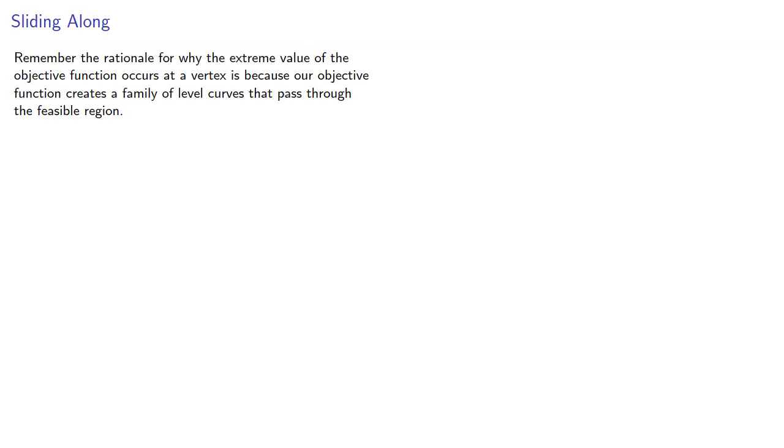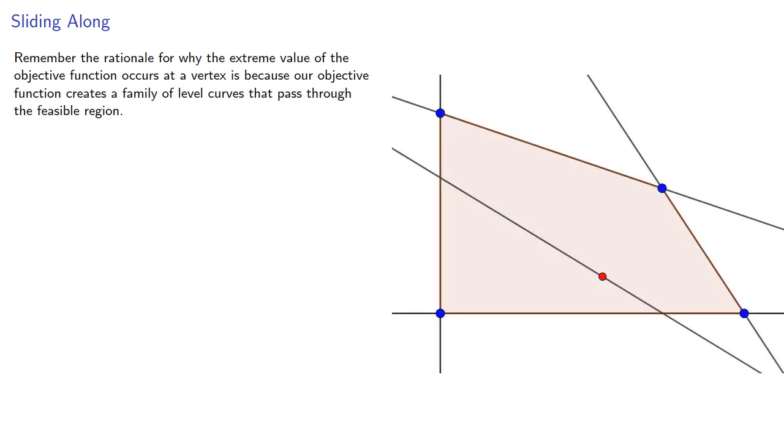Remember the rationale for why the extreme value of the objective function occurs at a vertex is because our objective function creates a family of level curves that pass through the feasible region. If we're assuming our objective function is linear, this is a family of lines, or planes, or whatever.